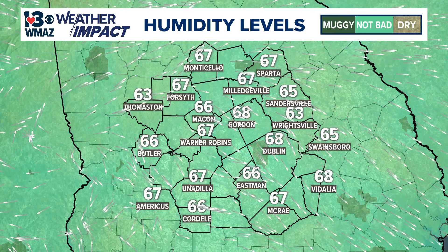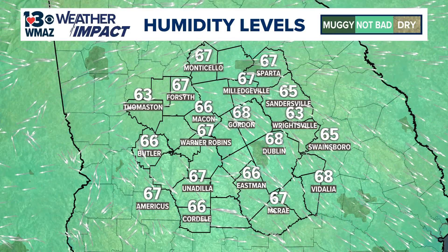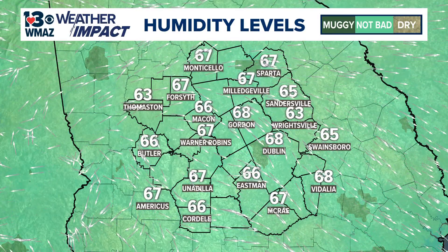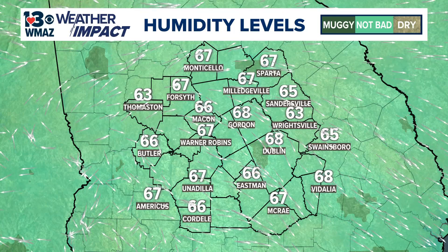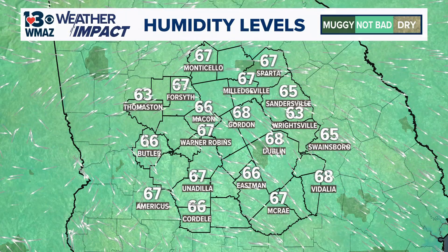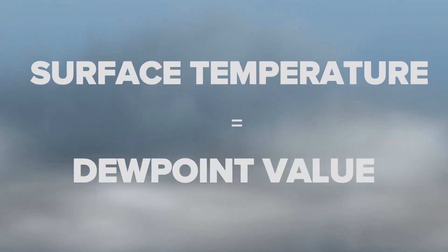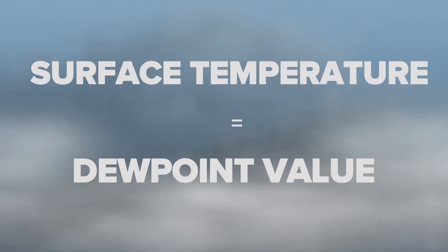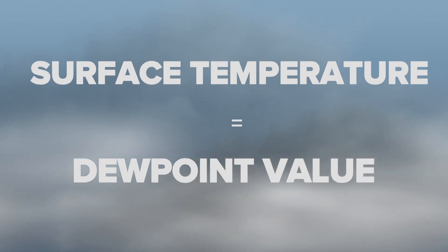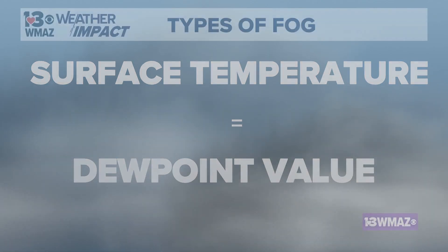How fog is formed actually has a lot to do with this map that you see us use a lot, the dew point map. Fog occurs when the temperature at the surface matches up with a dew point value. What this means is the air near the surface is saturated and it can condense to form fog.